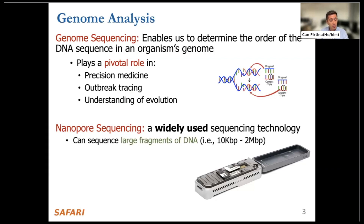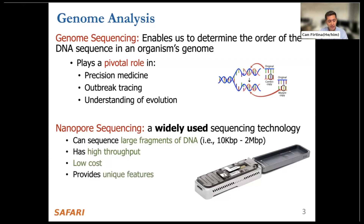Nanopore sequencing can sequence large fragments of DNA from 10 kilobases to 2 million base pairs. It has high throughput, it is relatively low cost, and it has some unique features that I'll be covering in the next slides.